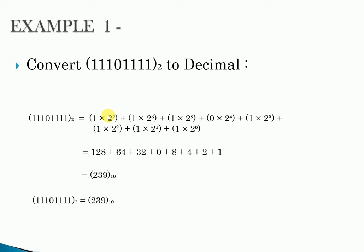2 to the power 7 is 128, 2 to the power 6 is 64, 2 to the power 5 is 32, 2 to the power 4 is 16, and 16 multiplied by 0 is 0. 2 to the power 3 is 8, 2 to the power 2 is 4, 2 to the power 1 is 2, and 2 to the power 0 is 1. Summing all these products, we get the answer 239. The next example is 10100011 to decimal.